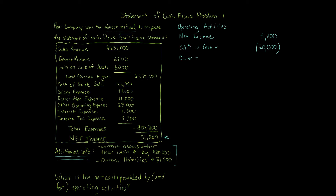Current liabilities have a direct relationship — when current liabilities go down, cash goes down. The idea is that if you are paying off your liabilities, you've paid money to the bank. If you are borrowing money, current liabilities go up and you're taking money from the bank. So it's a direct relationship. Current liabilities decreased by $1,500, so cash decreases by $1,500.